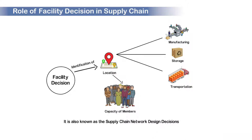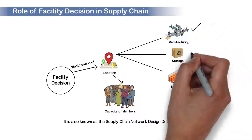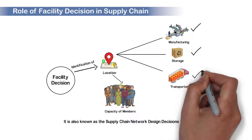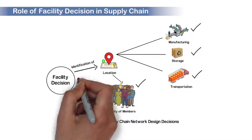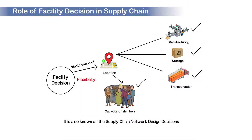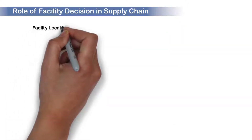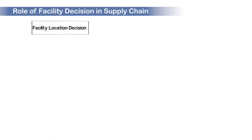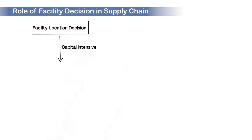The network design affects all the members of the supply chain, as well as the role of each facility. The decision is highly significant as it determines the flexibility of the supply chain in the current dynamic market condition.